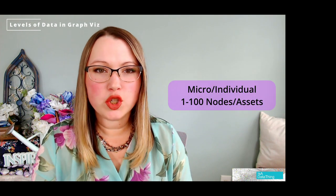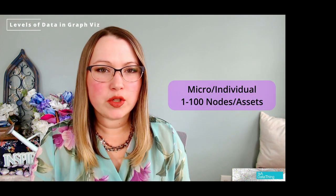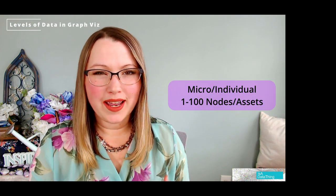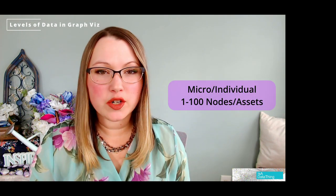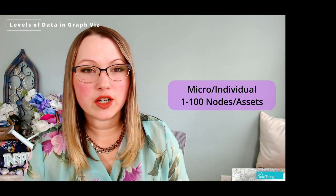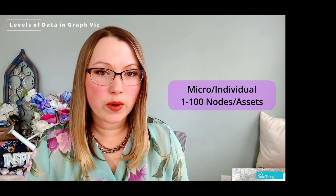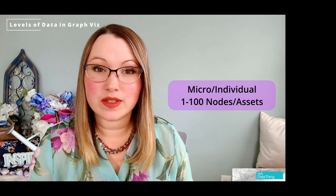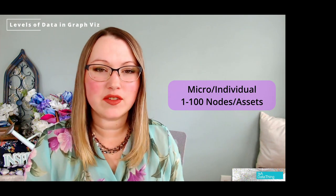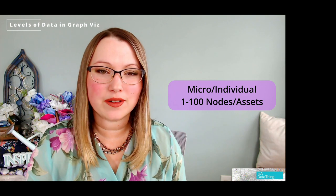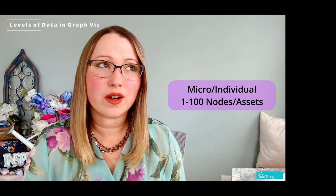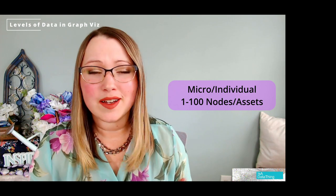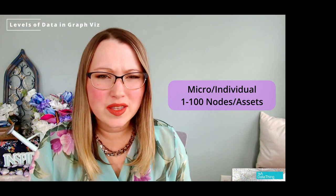The first is the micro level, which is usually between one and about a hundred records, data points, entities, or nodes — or classes if you're talking about a graph. This is the lowest level that you can be at.